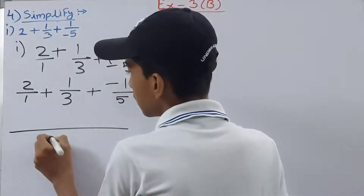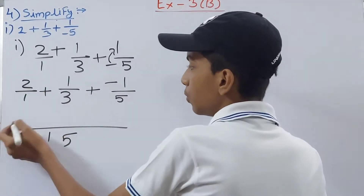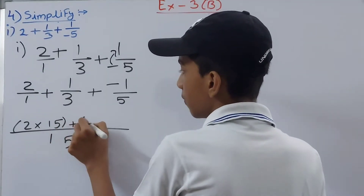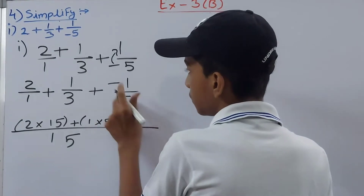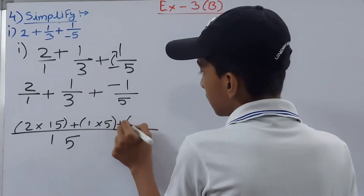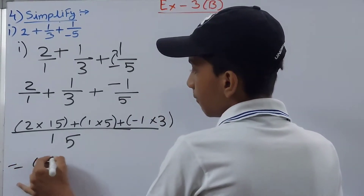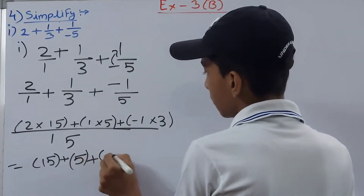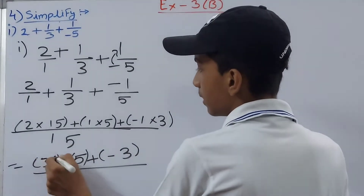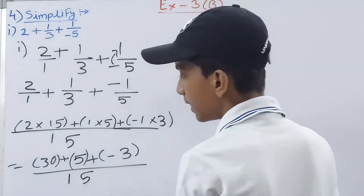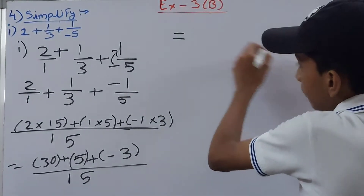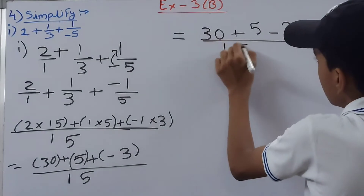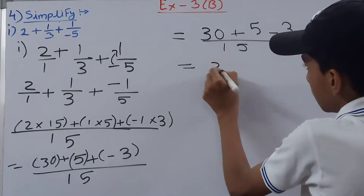So we place 15 in the denominator. Then: 2 × 15 = 30, plus 1 × 5 = 5, plus (-1) × 3 = -3. So we get 30 + 5 - 3 = 32 upon 15.